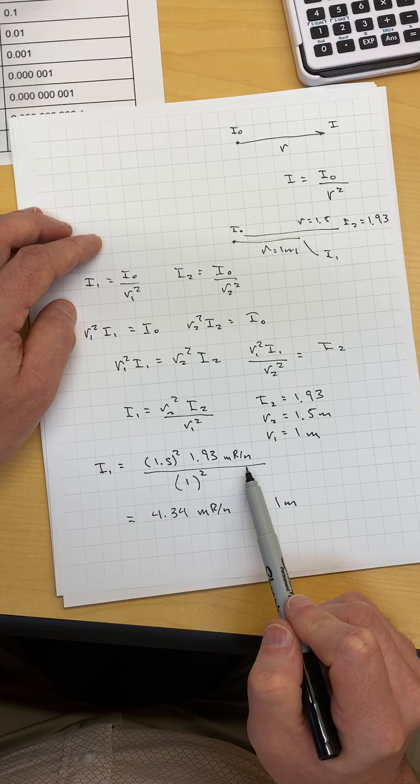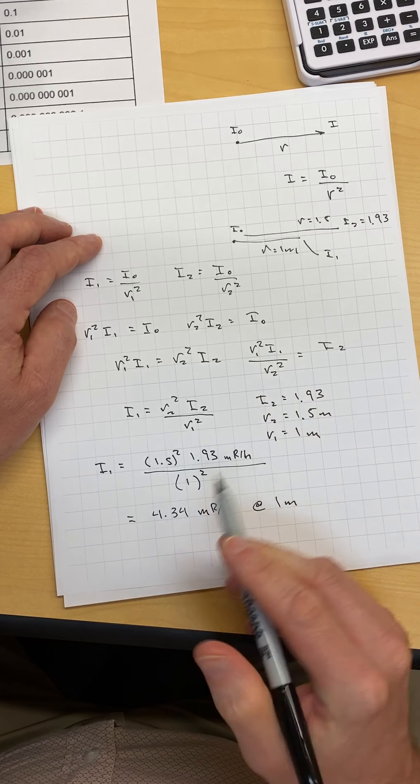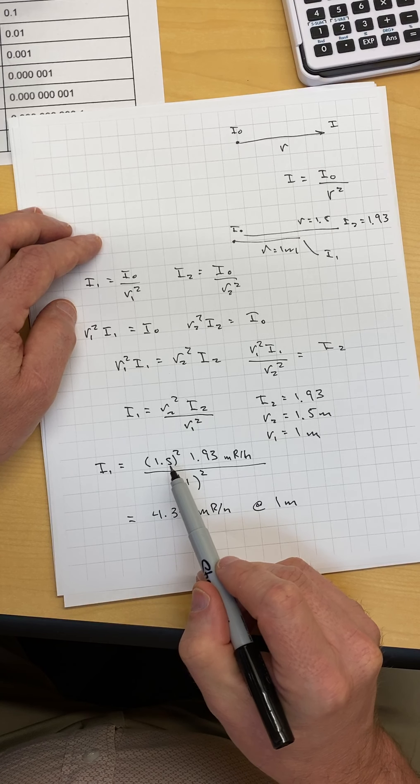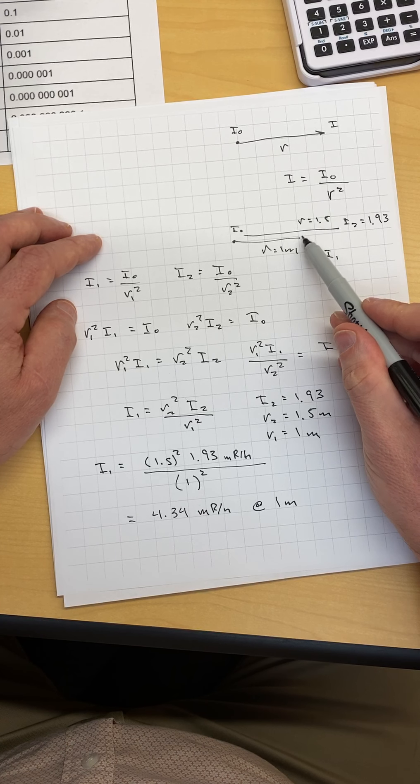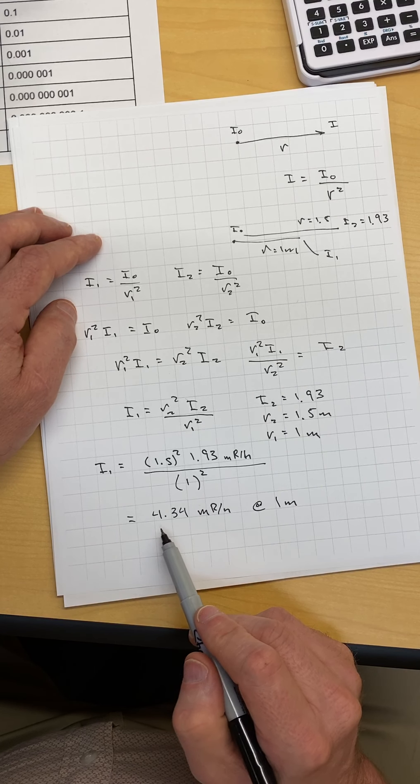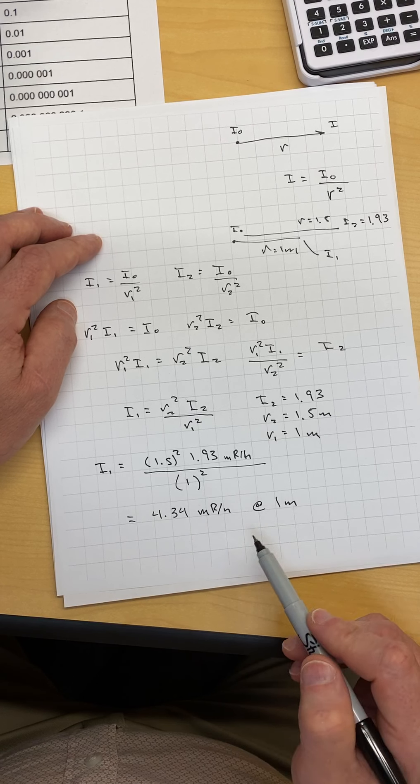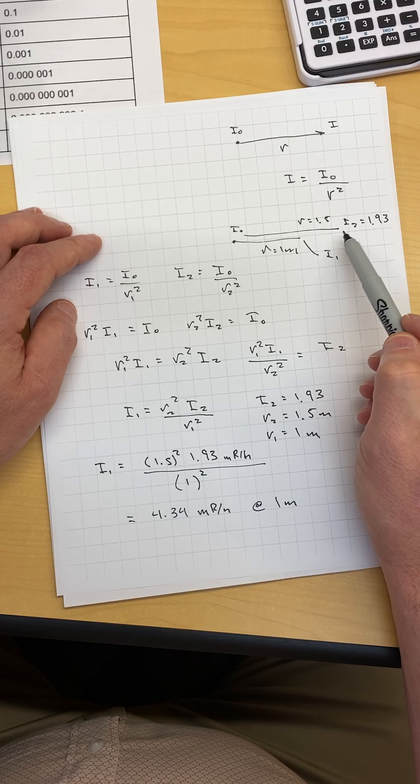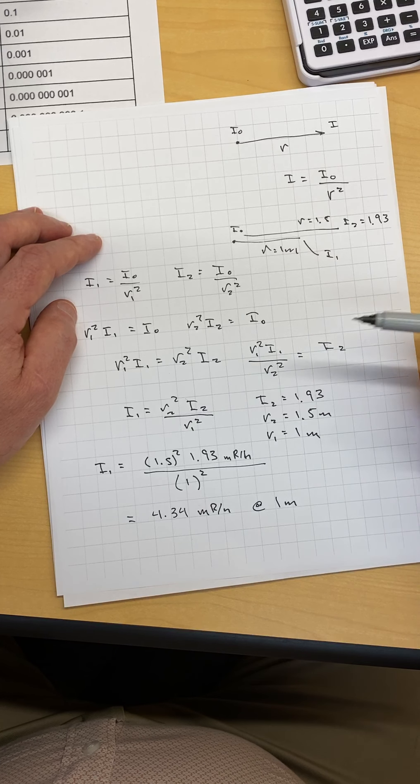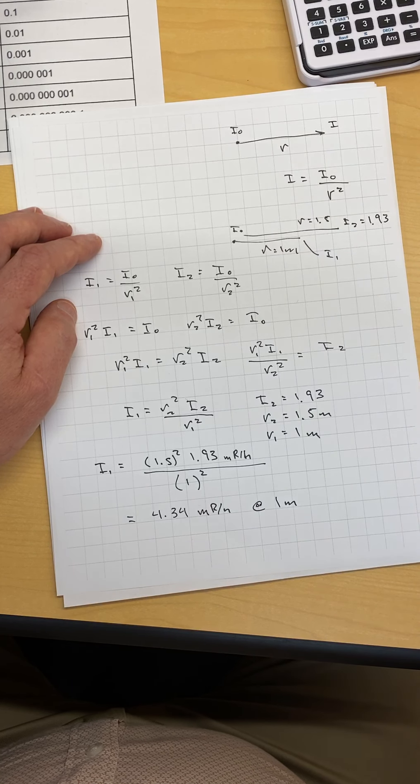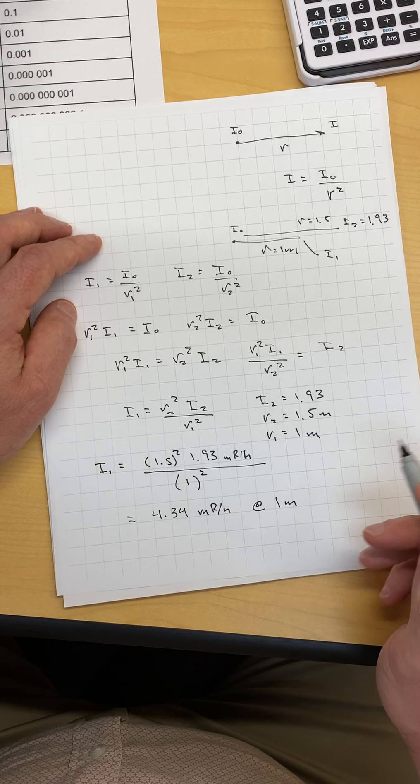We get 1.93 milliroentgens per hour times 1.5 meters squared divided by 1 meter squared. We're going from 1.5 to 1. We get 4.34 milliroentgens per hour. Remember, when doing inverse square law, when we're going from a location to a new one, if we're getting closer to the source, the reading should go up. If we're getting further away from the source, the reading should go down.